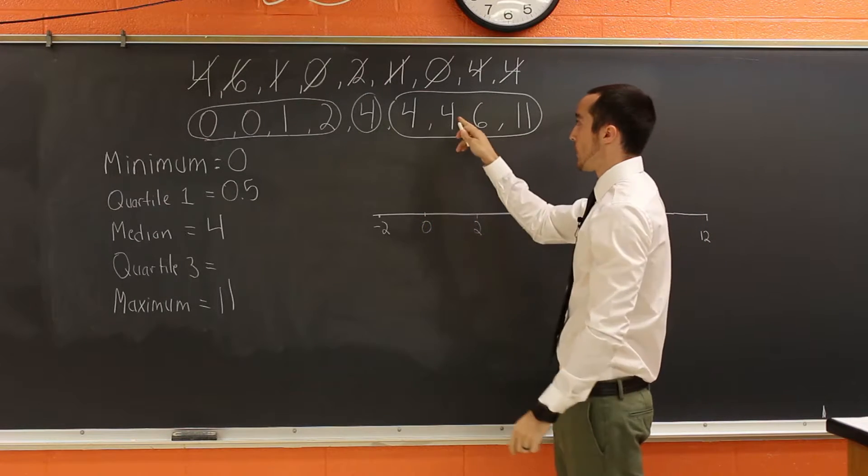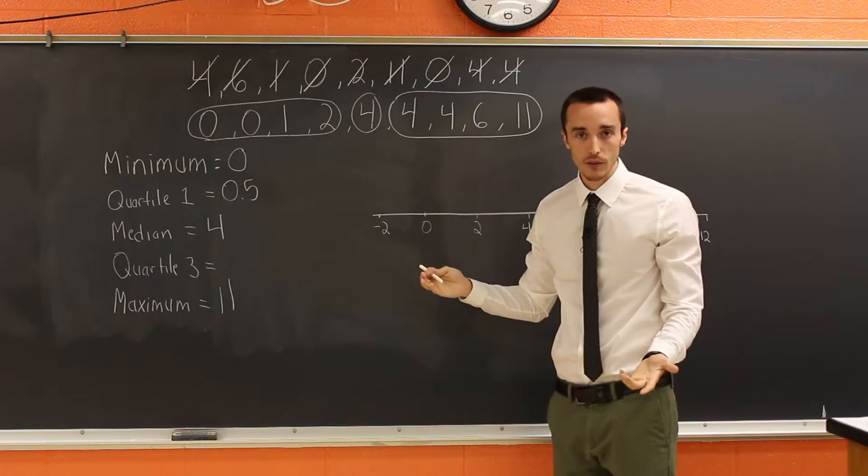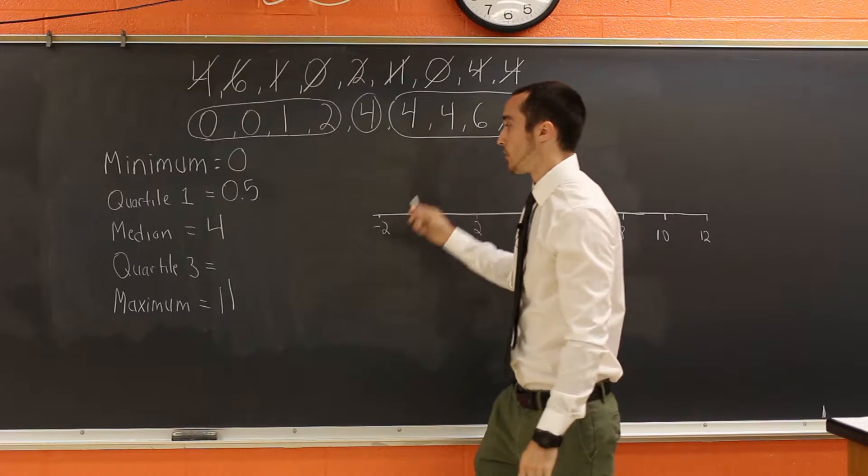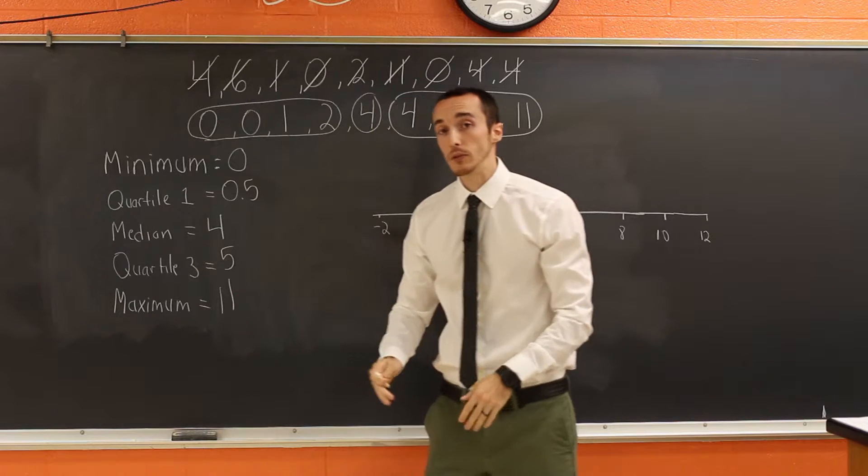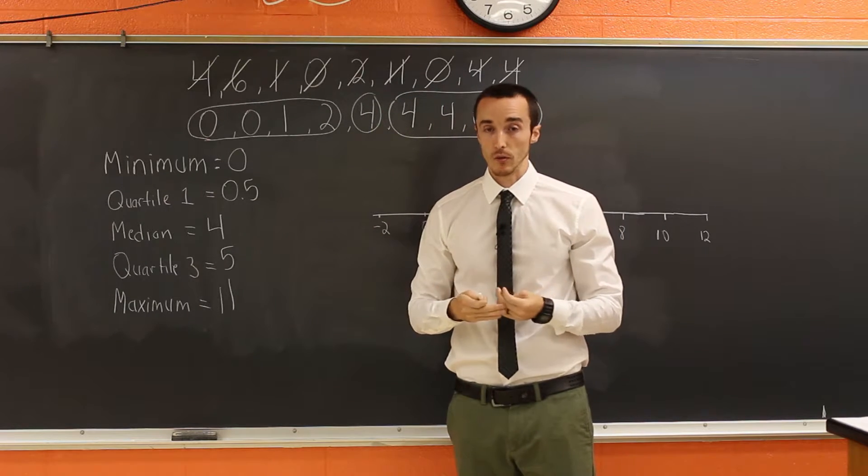And you can do this in your head. The number immediately in between four and six is, of course, five. So five is the average of those two numbers. And now we have the five important numbers that make a box and whisker plot.